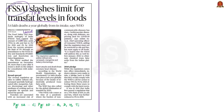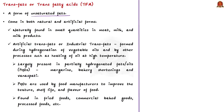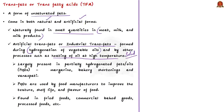Trans fats are a form of unsaturated fats and they come in both natural and artificial forms. Naturally formed trans fats are found in small quantities in meat, milk and milk products. Artificial trans fats or industrial trans fats are created when hydrogen is added to unsaturated liquid vegetable oils to make them more solid — that is, they are formed during hydrogenation of vegetable oils and also by other processes such as heating oil at high temperature. They are largely present in partially hydrogenated fats or oils (PHOs), such as margarine and bakery shortenings, which are used in preparation of bakery products. They are also present in vanaspati, used in the preparation of sweets and deep fried foods. Food manufacturers use PHOs to improve the texture, shelf life and flavor of food, so artificial trans fats are found in fried foods, commercial baked goods, and processed foods.